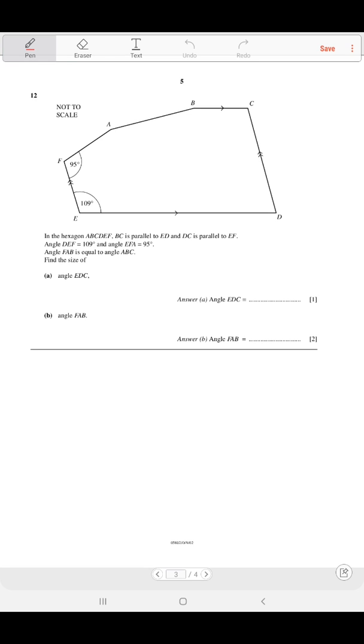Hello grade 9, this is the new questions. In the hexagon ABCDEF, BC is parallel to ED and DC is parallel to EF. Angle DEF equals 109 degrees and angle EFA equals 95 degrees.